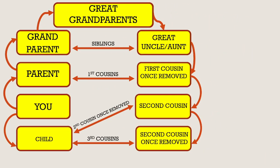I've expanded the charts a little further here. I've included all the way down to second cousin once removed, as well as your child, because your child will match your second cousin as a second cousin once removed, match your first cousin as a first cousin twice removed, and also match your second cousin once removed as a third cousin.